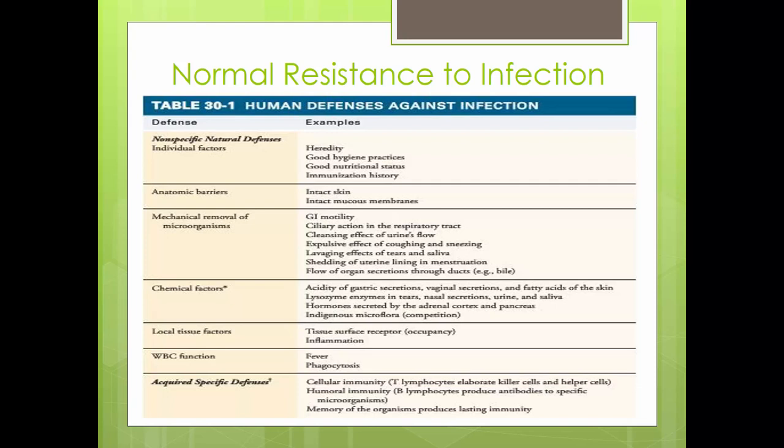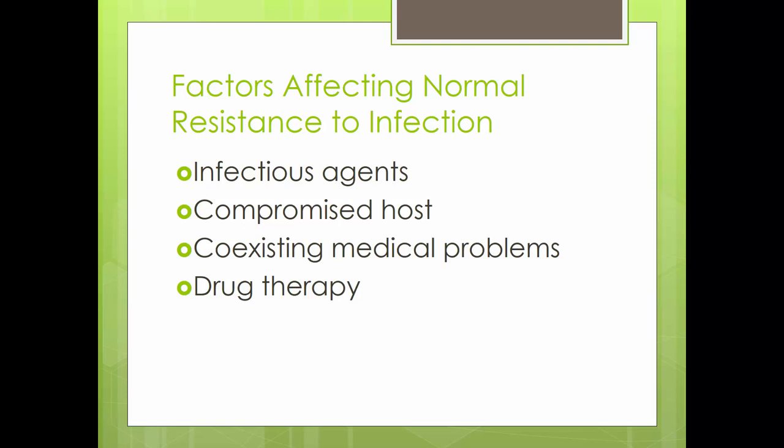Fever increases cell metabolism, interrupts viral replication, slows bacterial growth, and increases leukocyte mobility and action. Antigens are foreign particles like microbes that enter the body and trigger an immune response when they enter the lymphatic and circulatory system. T lymphocytes and B lymphocytes then fight the microbes. Some T cells keep a memory of the antigen and can be reactivated quickly upon re-exposure — this is cellular immunity. B lymphocytes produce plasma cells which produce antibodies that circulate in the bloodstream and act on microbes and viruses — this is humoral immunity.